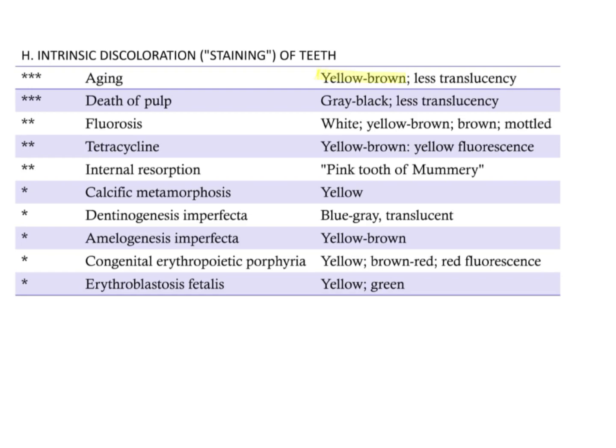Yellow-brown discoloration is seen due to aging. Necrosis or death of pulp will cause black or grey discoloration of the tooth, associated with less translucency. Fluorosis will give you white, yellow-brown, brown, and mottled appearance. Tetracycline will give you yellow-brown or yellow fluorescence.